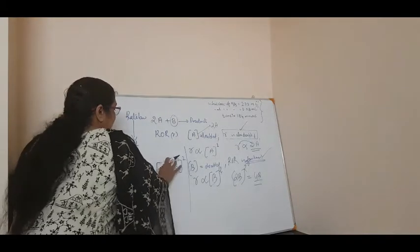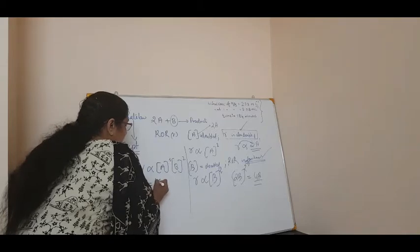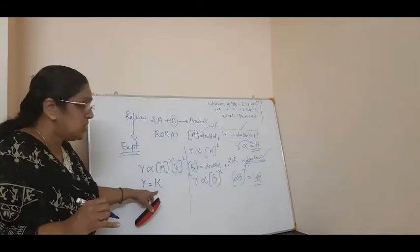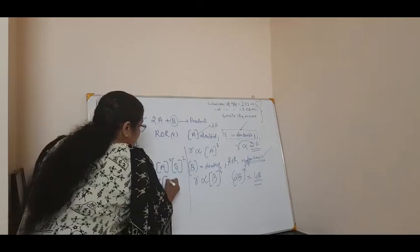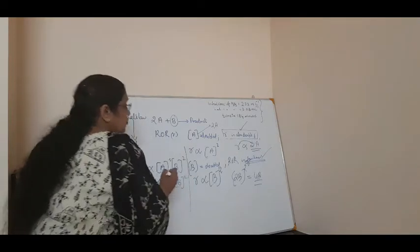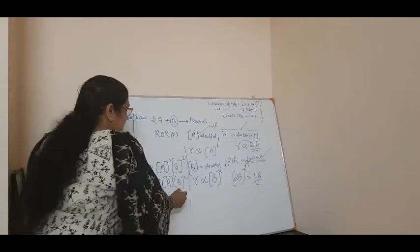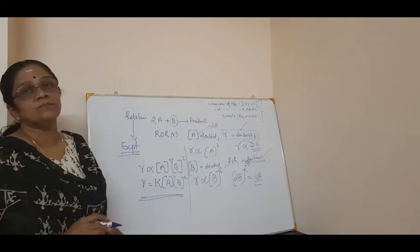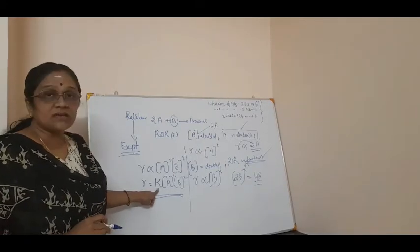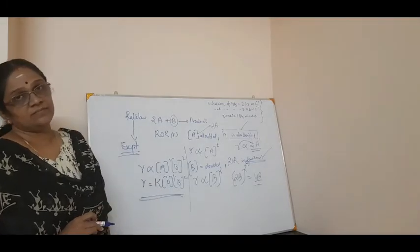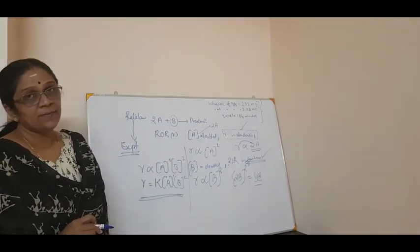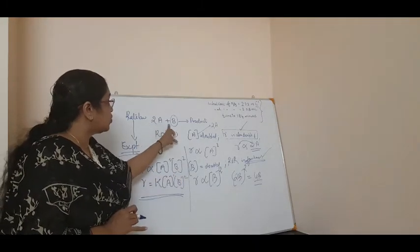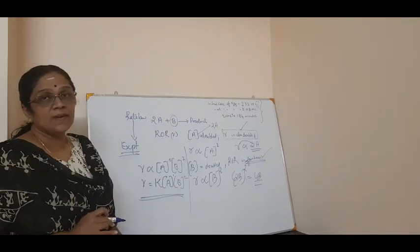If I remove the proportionality sign, I have to introduce a constant. So R is equal to K into concentration of A raised to 1 into concentration of B raised to 2. This is what is called the rate law expression or rate law, where K is called the rate constant.